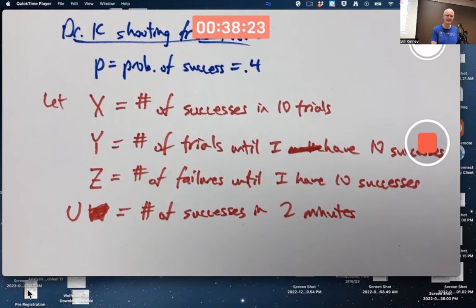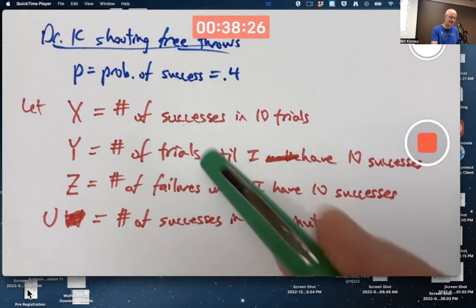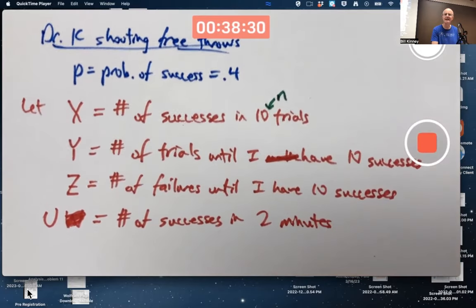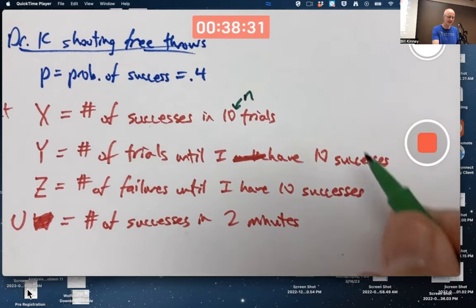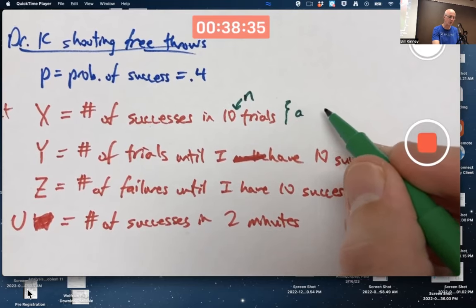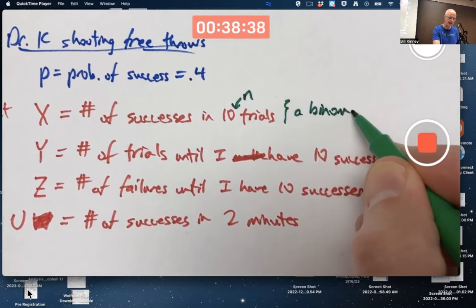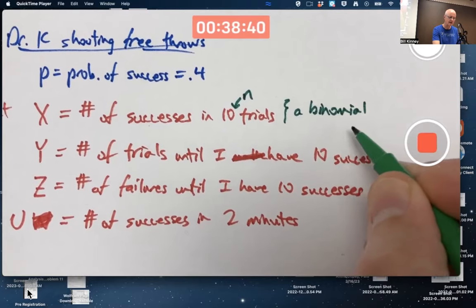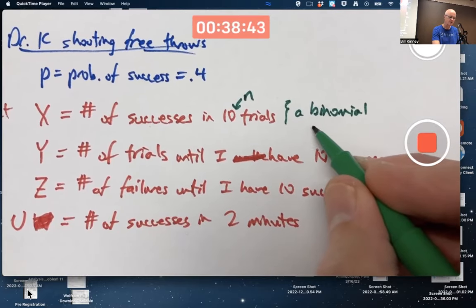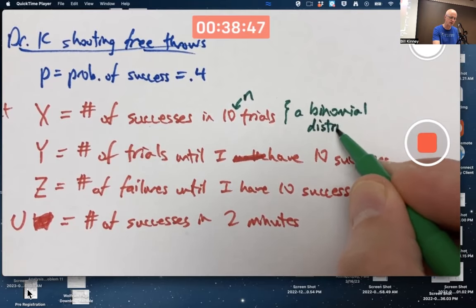X — number of successes in a certain number of trials, where the number of trials is called N — is called a binomial random variable, or a binomial distribution. X itself would be a binomial random variable; you would say X has a binomial distribution.